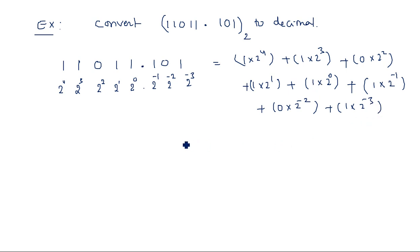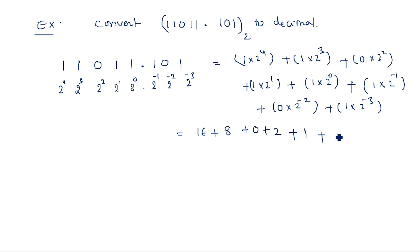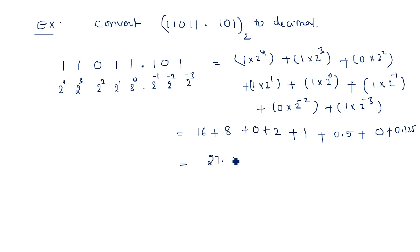If you simplify this: 2⁴ = 16, plus 8, plus 0, plus 2, plus 1, plus 2⁻¹ which is 0.5, plus 0, plus 2⁻³ which is 0.125. Adding these: 16 + 8 + 2 + 1 = 27, and 0.5 + 0.125 = 0.625. So the equivalent decimal number is 27.625.